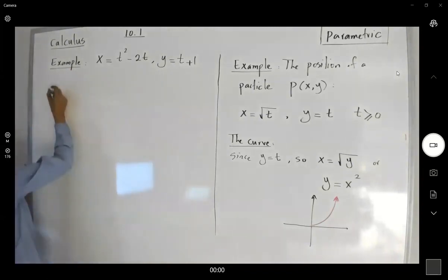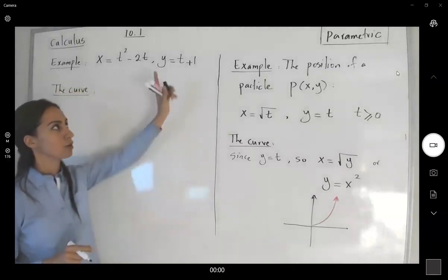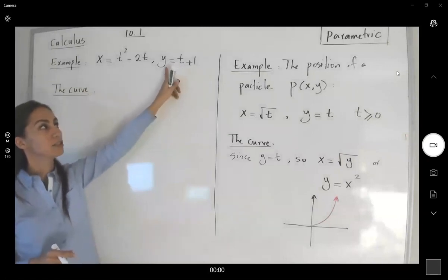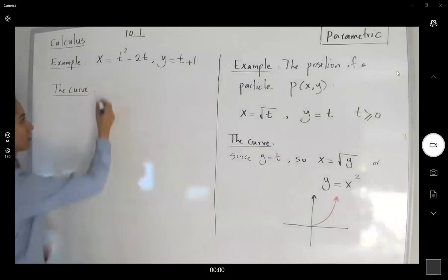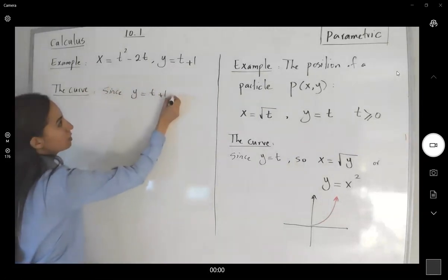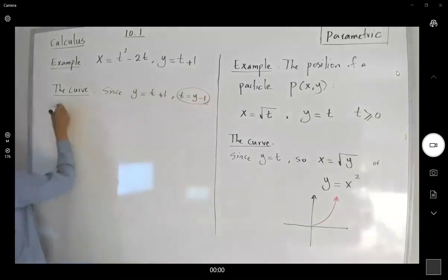So let's write down the curve here. What I'm going to do is write t in terms of y, then substitute that here. Since y is t plus 1, t is y minus 1. Now substitute.